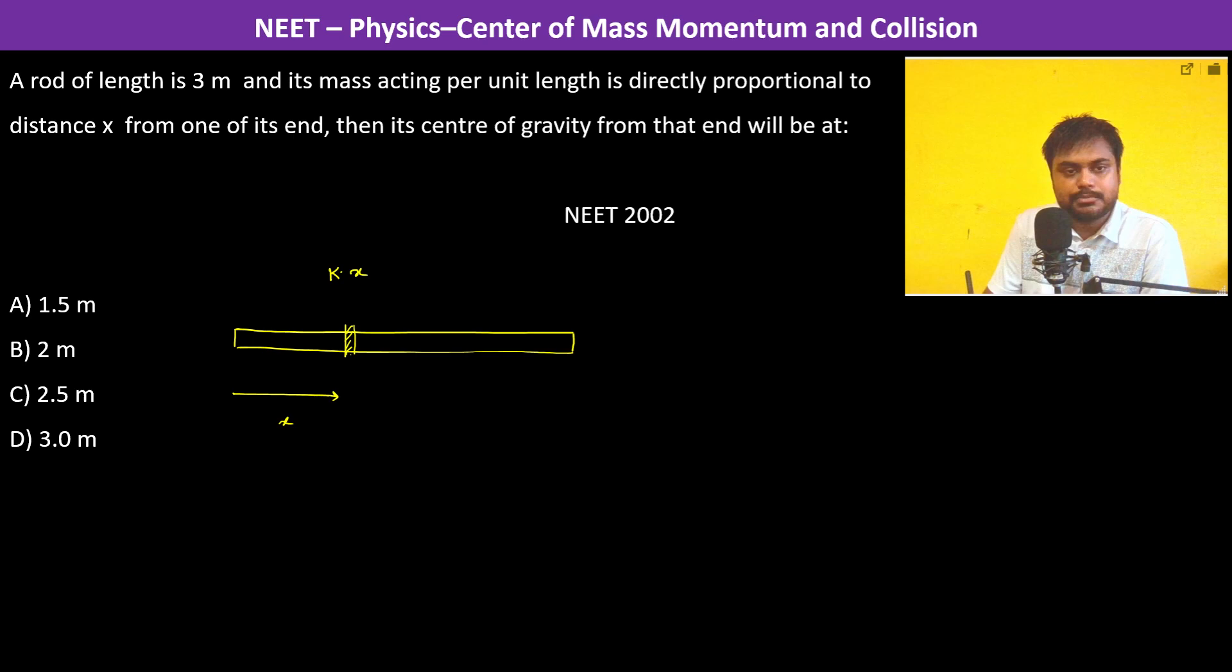This is the mass per unit length, which is lambda. Therefore, the dm (small mass element) is lambda into dx, which is mass per unit length times dx, which equals kx dx.